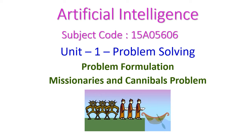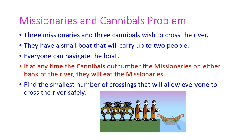Hello friends, welcome to today's artificial intelligence class. In this class we will see the most popular missionaries and cannibals problem, which comes under the first unit on problem solving. There are three missionaries and three cannibals who wish to cross the river. They have a small boat that can carry up to two people, so one or two people can ride the boat.